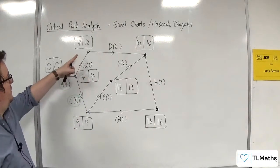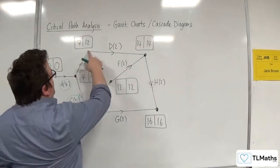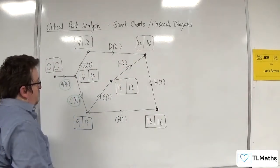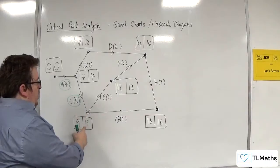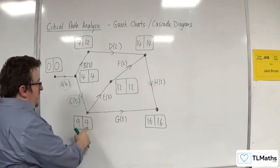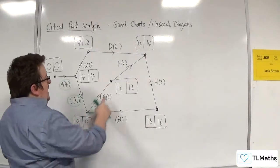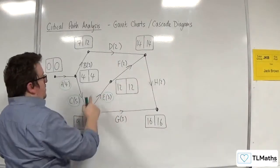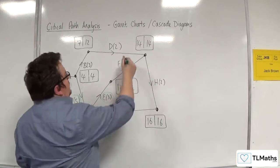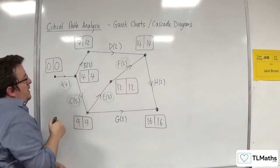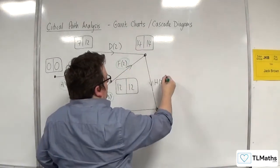B is not critical because of the 7, 12, and that means D is not critical either. G is not critical because 9 plus 3 is not 16. E is critical - 9 plus 3 is 12, and so F has to be critical, and H is also critical.